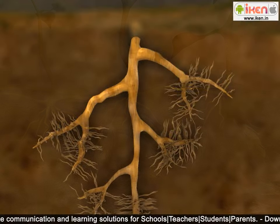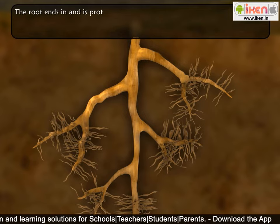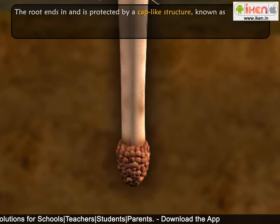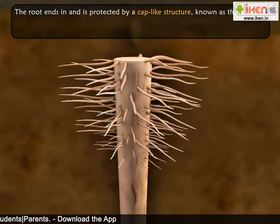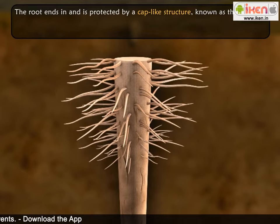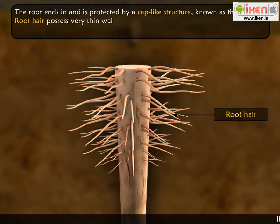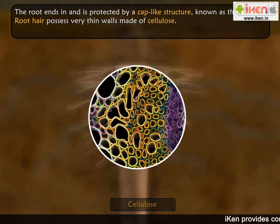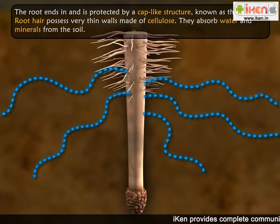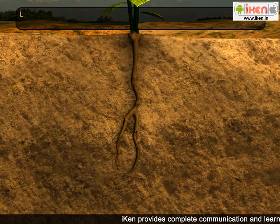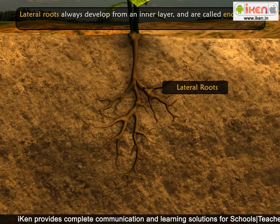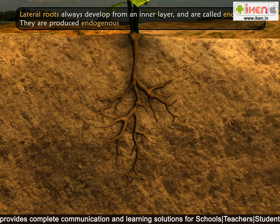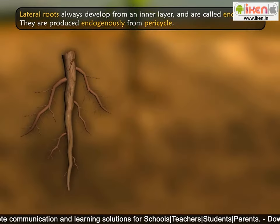The root ends in and is protected by a cap-like structure known as the root cap. The root bears unicellular hairs that appear in a cluster in the tender part of the root, a little behind the apex. Root hairs possess very thin walls made of cellulose; they absorb water and minerals from the soil. Lateral roots always develop from an inner layer and are called endogenous — they are produced endogenously from the pericycle.